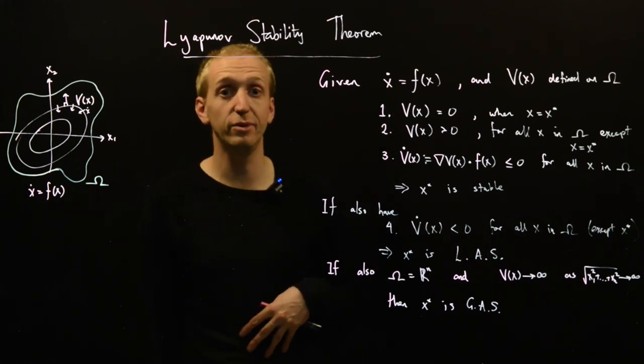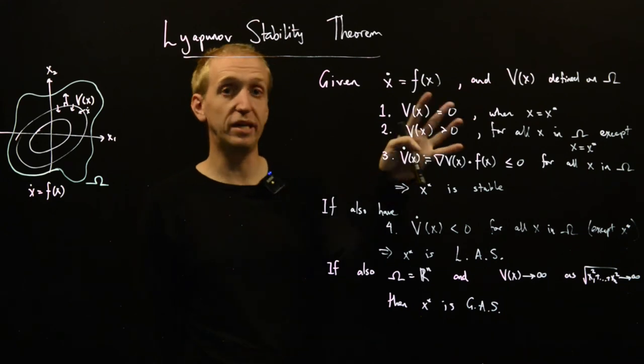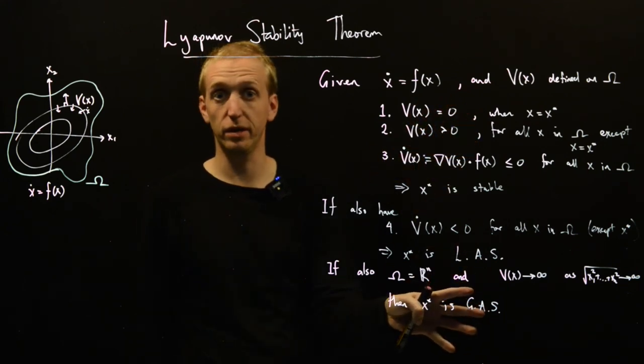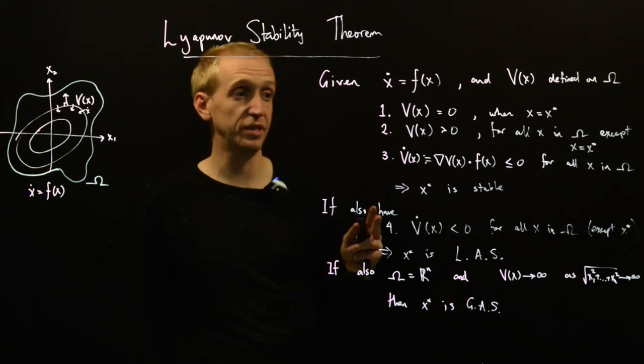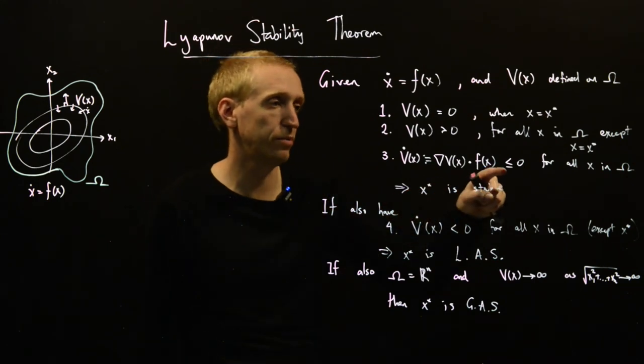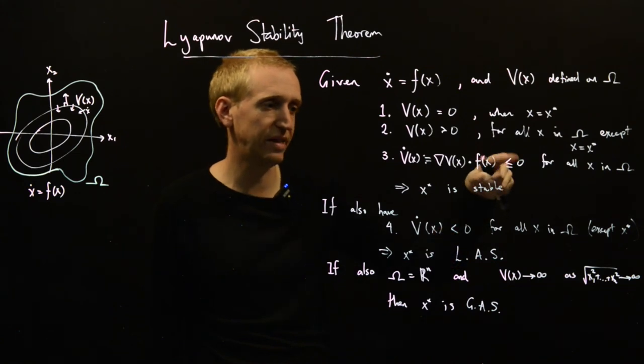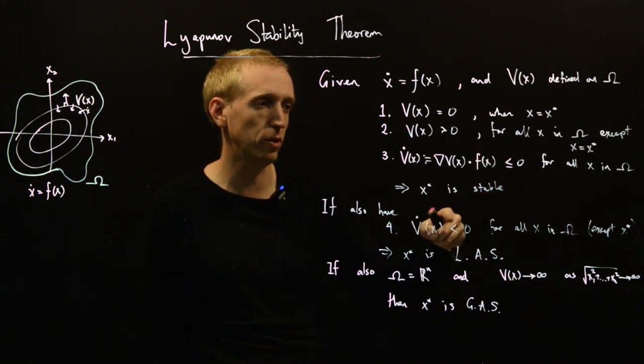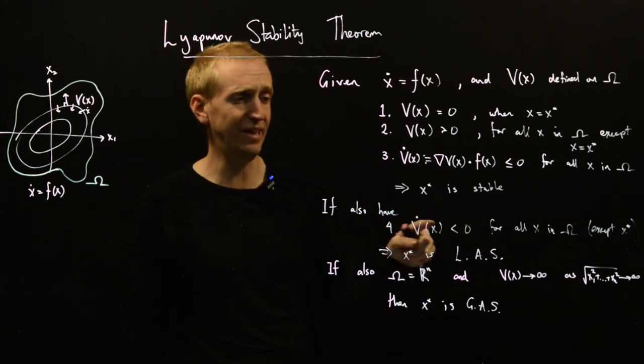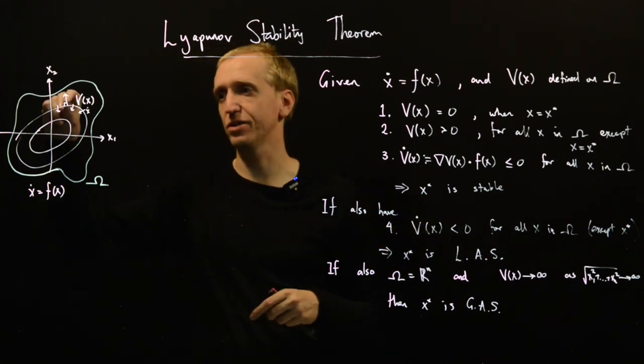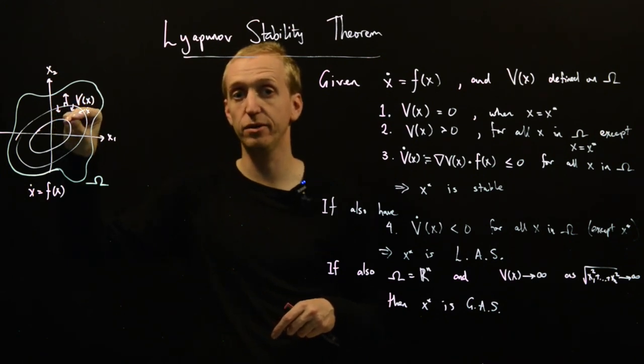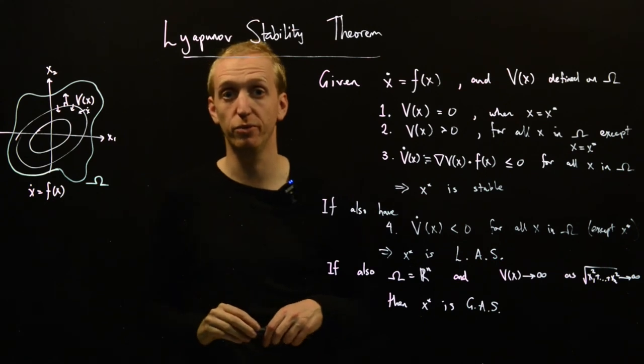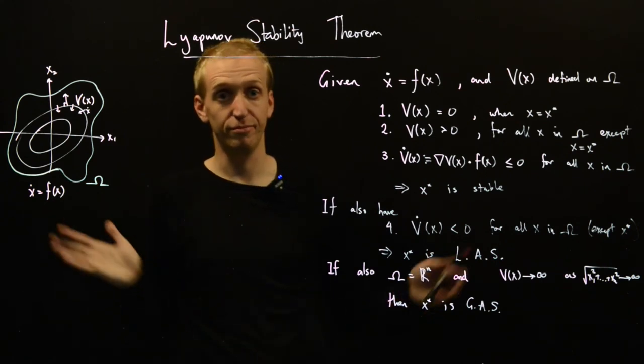But here you have it. These are our Lyapunov stability theorems going from the weakest, so just looking at stability, through to strongest, which is global asymptotic stability. And the only real meaningful differences come through whether or not we need inequality, less than or equal, or strict inequalities on our V dot term. And this is just telling us whether we're guaranteed to move to a contour of lower energy, or we might just be staying along the contour where we were before. So now let's go do some examples. We'll see you next time.